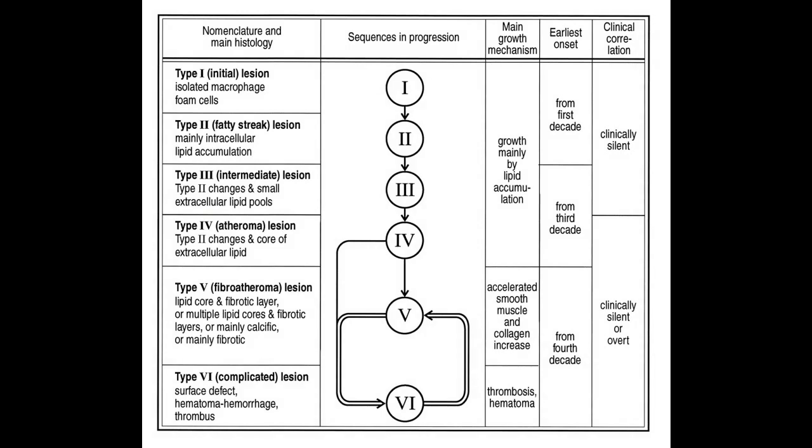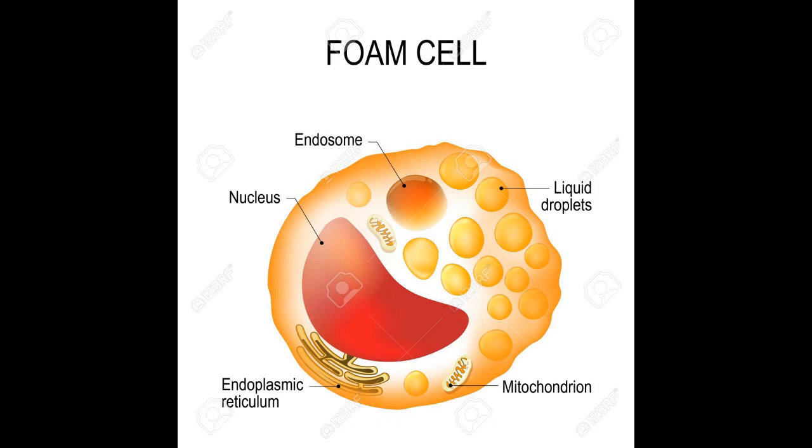Let's discuss one by one in detail. Number one is fatty dots, or initial lesions, in which few cells are filled with lipids. This may start appearing at an early age — maybe the first year of life — and almost all children have this initial lesion by the age of 10 years. These fatty dots are around 1 mm in size.